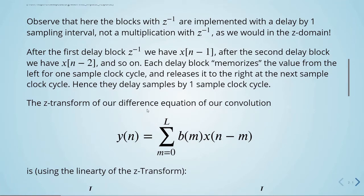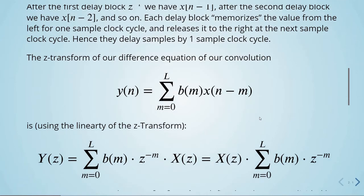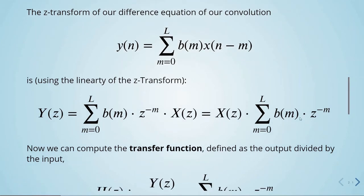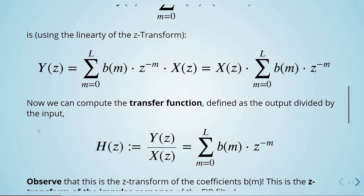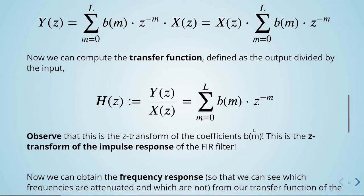Now the z-transform of our difference equation — our convolution. If we apply the z-transform, we get this result. We can then compute the transfer function by dividing the output in the z-domain by the input in the z-domain. That is the transfer function — output divided by input — and we end up with this equation. We can observe that this is the z-transform of the coefficients b of m, which is the z-transform of the impulse response of the FIR filter.